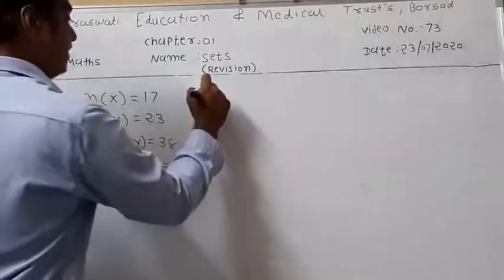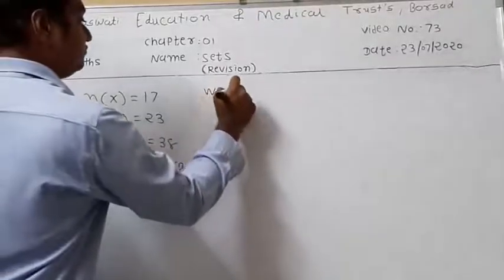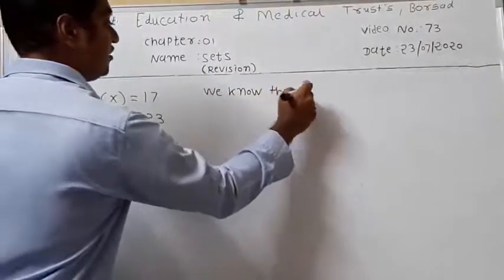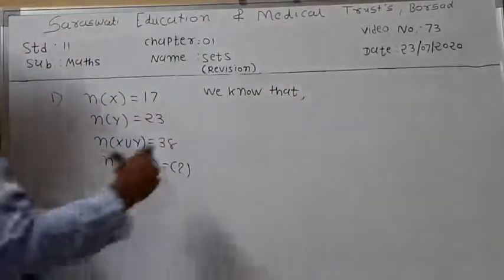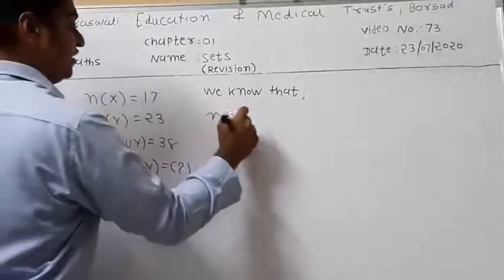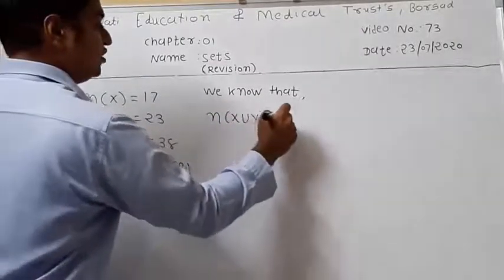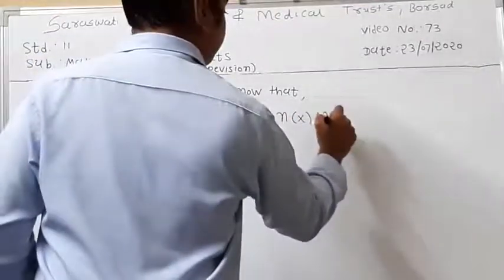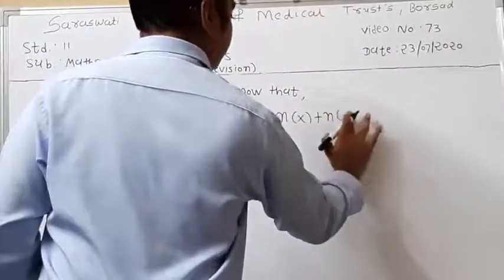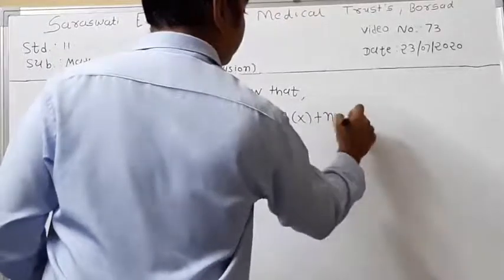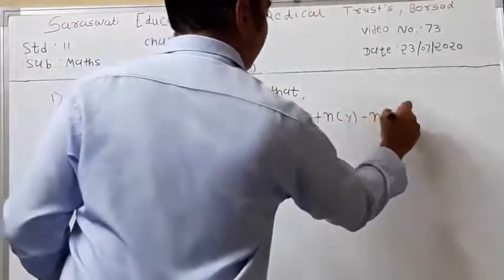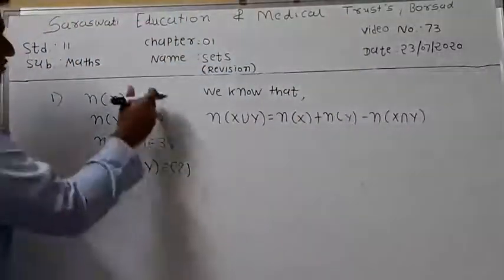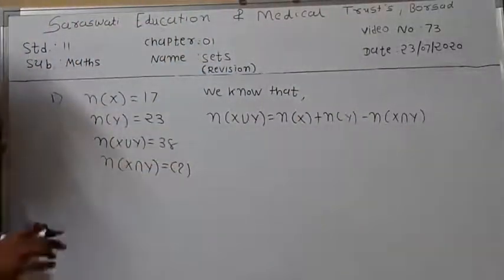We know that N of X union Y is equal to N of X plus N of Y minus N of X intersection Y. Here three values are present, so the remaining value we can find out.